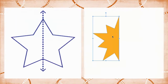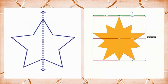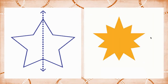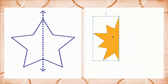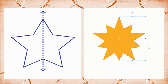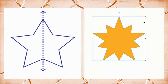Children, now look at the star. In this star, the dotted line divides it into two parts which fall exactly on one another. The star is symmetrical with respect to this line.